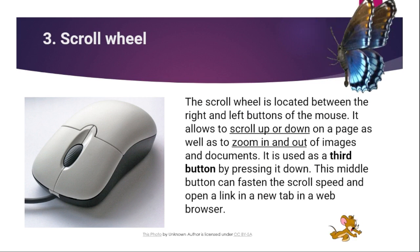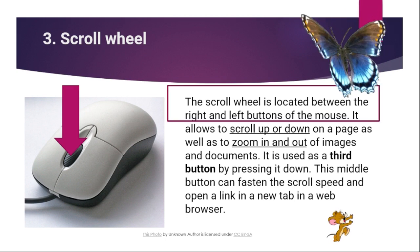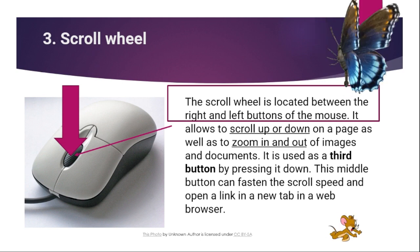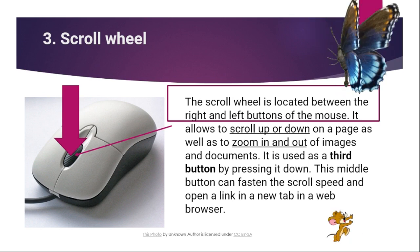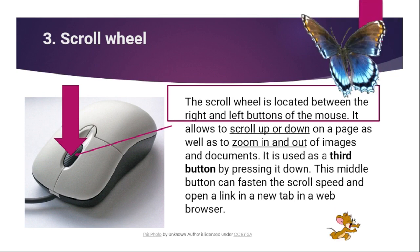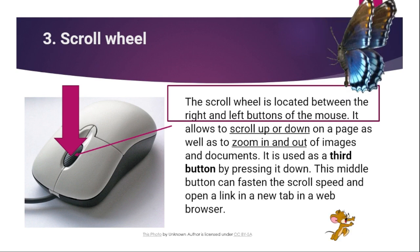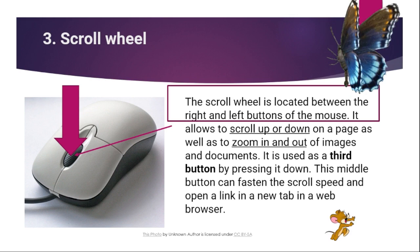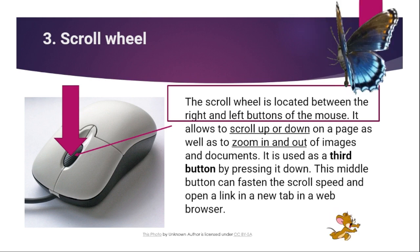Next is we have the scroll wheel. Ano ba yung scroll wheel? The scroll wheel is located between the right and left button — sa gitna siya. It allows you to scroll up or down on a page as well as to zoom in and out of images and documents. It is used as the third button by pressing it down. This middle button can fasten the scroll speed and open the link in a new tab in a web browser.